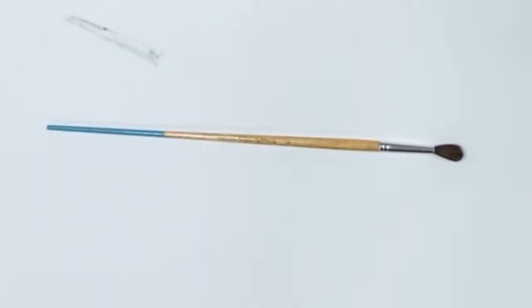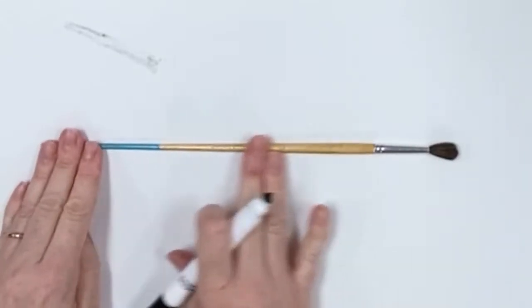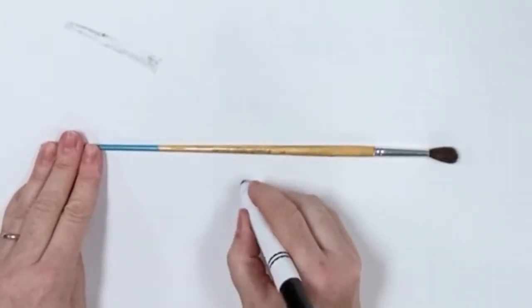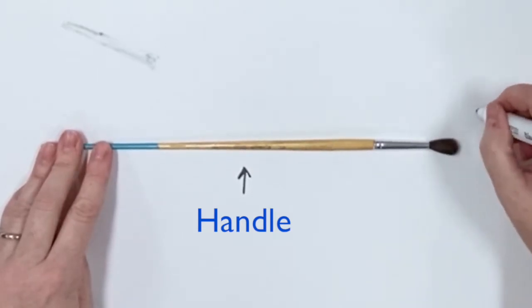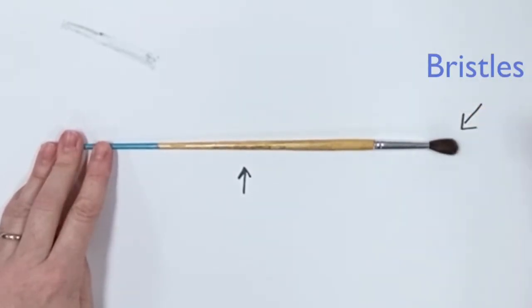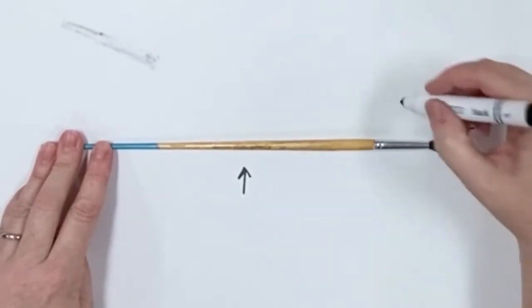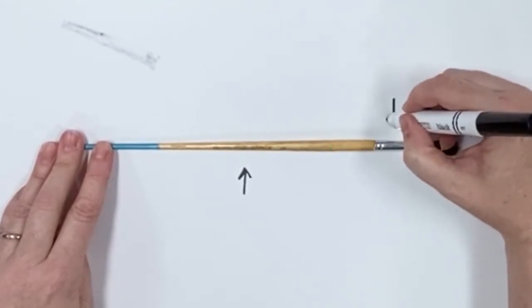So let's review the parts. What was the long stick called? And the hair at the end? And the metal part.